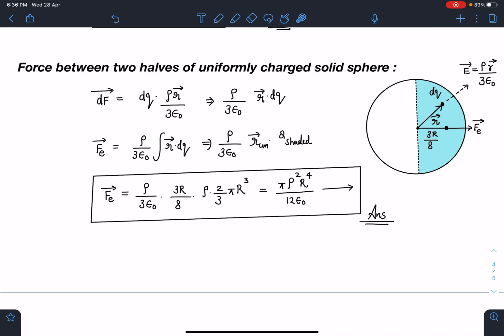Another example: force between two halves of uniformly charged solid sphere. I am going to take this charge dq and I know inside the solid sphere the electric field is ρr by 3ε₀. This force dq is going to be dq times ρr by 3ε₀. I can write this integral r dq as r_cm times q in the shaded part. It's a solid hemisphere, its center of mass will be at a distance of 3r by 8 from the center of the sphere. The q_shaded will become ρ into 2 by 3 πr³.